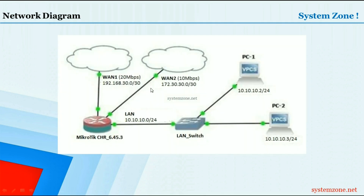In this video we will configure ECMP load balancing on this MikroTik router. The MikroTik RouterOS version is 6.45.3. This router has two WAN connections: ether1 has 20 Mbps bandwidth and ether2 has 10 Mbps bandwidth. The bandwidth is unequal and the bandwidth ratio is 2:1, so among three connections we should pass two connections through ether1 and one connection through ether2.